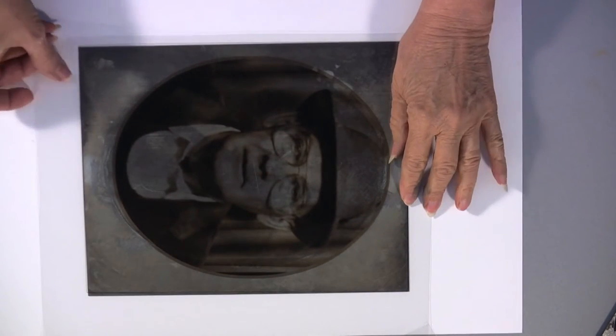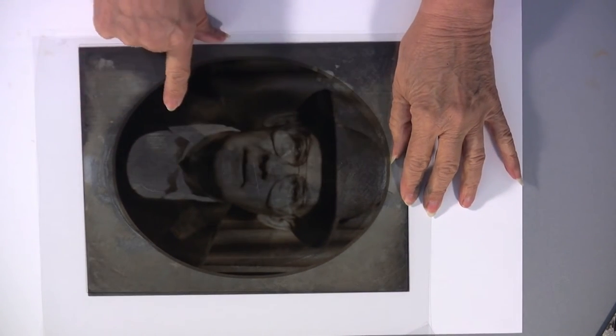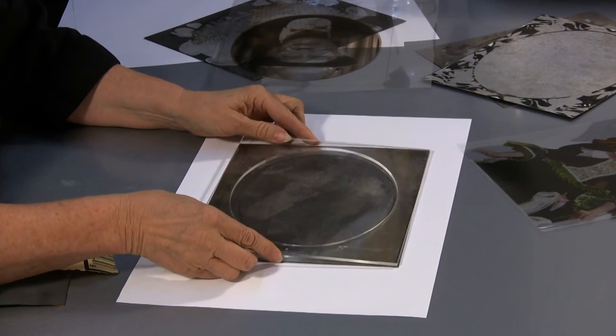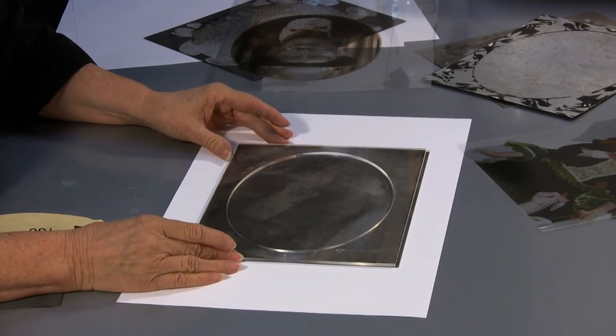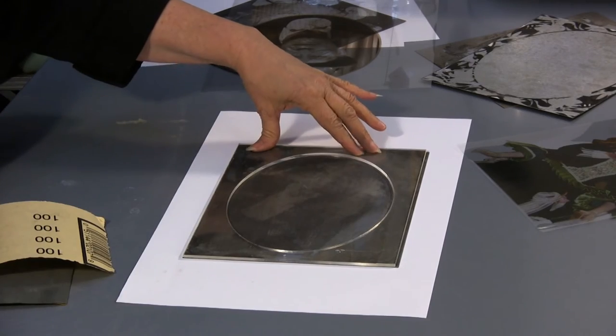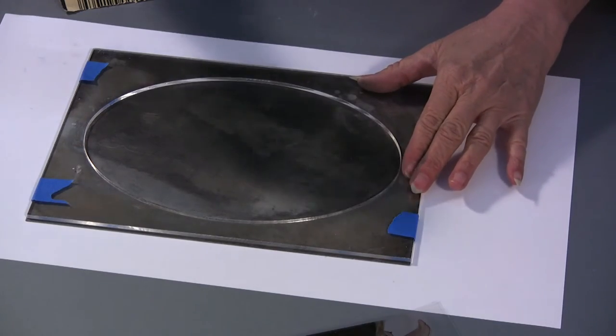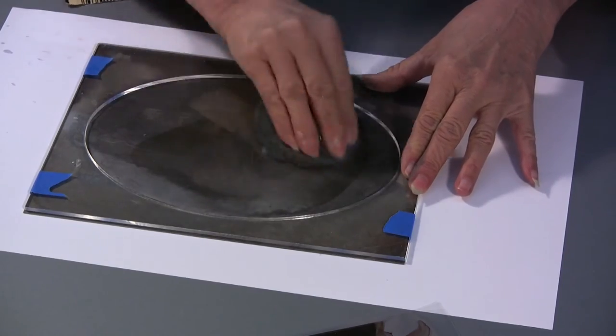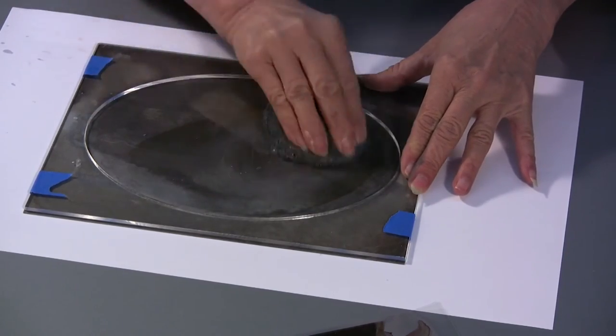But of course that center oval area is going to obscure the face. So what I'm going to do is use the template outside to protect this area out here that I want to keep. I'm going to use an SOS pad to scour away the patina that is in the center and in the oval area.